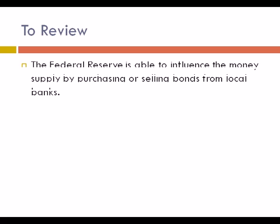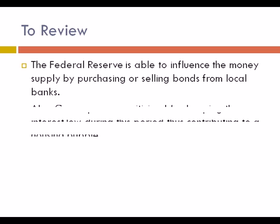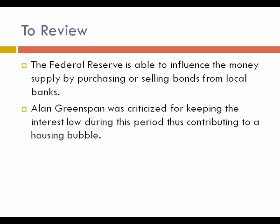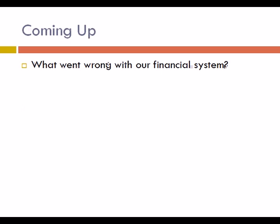To review: the Federal Reserve is able to influence the money supply by purchasing or selling bonds from local banks. Alan Greenspan was criticized for keeping interest rates low during this period, thus contributing to a housing bubble. Coming up, we will learn what went wrong with our financial system.